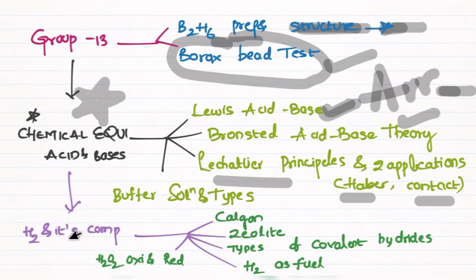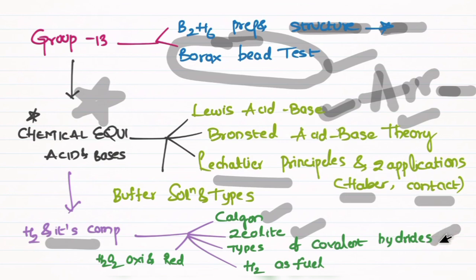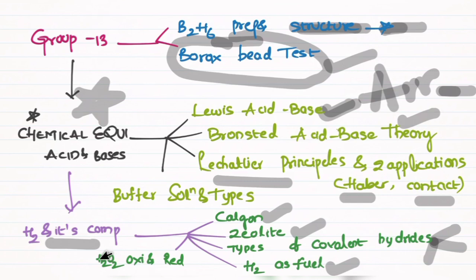Next, choose from Hydrogen and its Compounds — it is very easy. Key topics: types of hydrides — saline, zeolite, covalent hydrides — electron-rich, electron-precise, and electron-deficient — these are three types likely to be chosen. Then hydrogen as fuel, and H2O as an oxidizing and reducing agent — very important and highly expected questions.